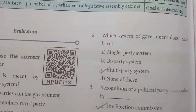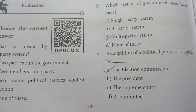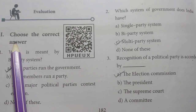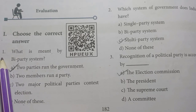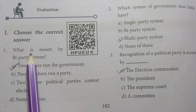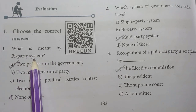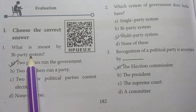Choose the correct answer, page number 182, Roman numeral 1. First one: what is meant by Biparty System? The answer is Biparty System.